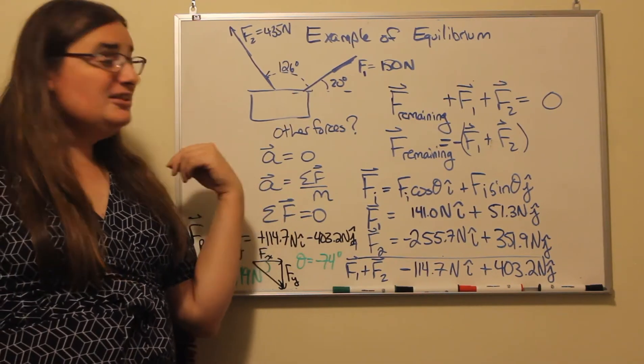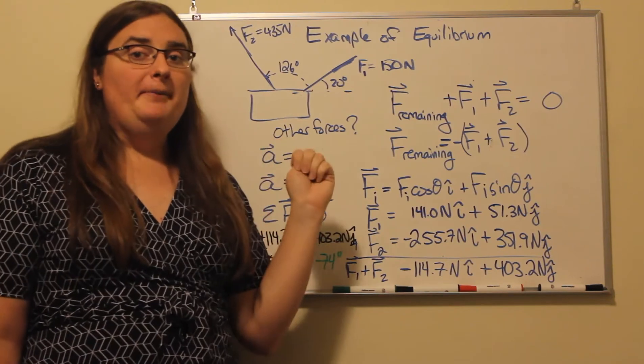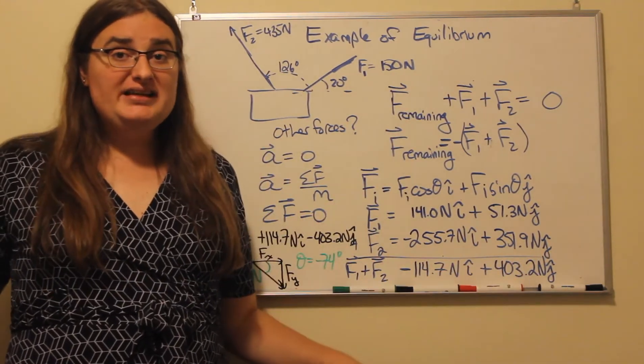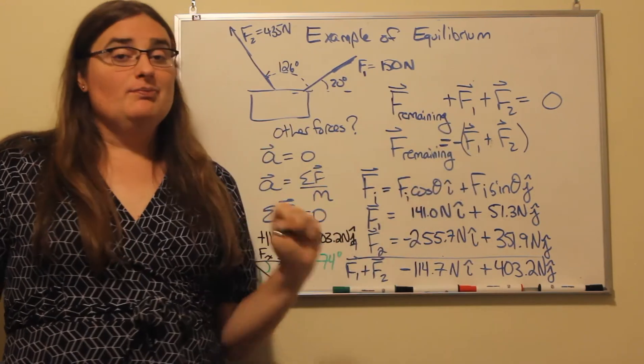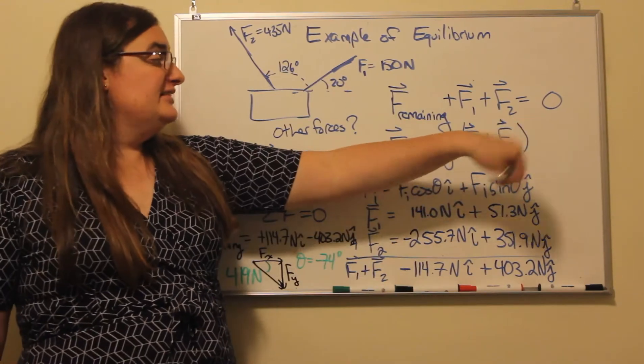So there has to be some remaining force that we don't know about. But if we add up whatever that remaining force is plus the force from cable one plus the force from cable two, we have to get zero.